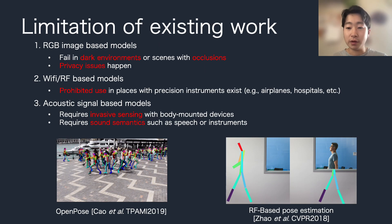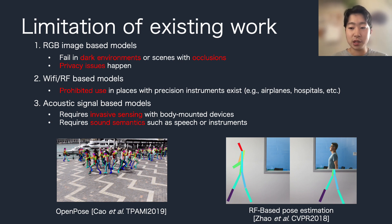In this slide, we will briefly explain some limitations of prior human pose estimation methods. The most famous and extensively researched method is RGB image-based models. These models have very good accuracy, as you can see in the picture below. However, they tend to fail in dark environments or scenes with occlusion.